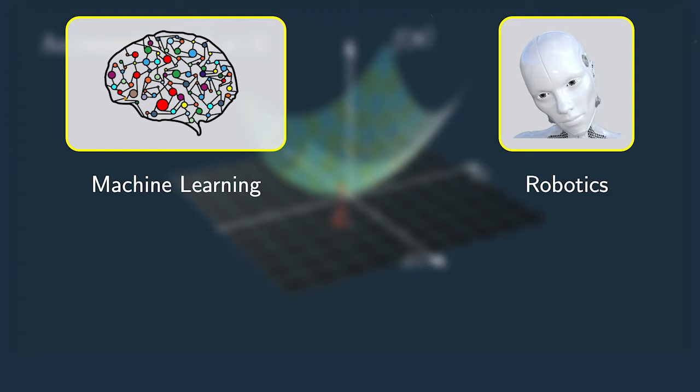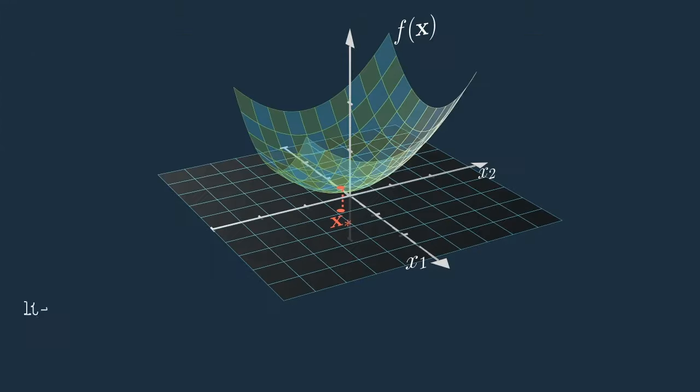So what can we do in that case? Some of the most useful and most used algorithms belong to the family of iterative optimization algorithms, and Newton's method, as we will see, belongs to this family.